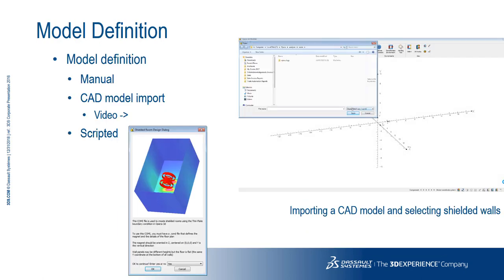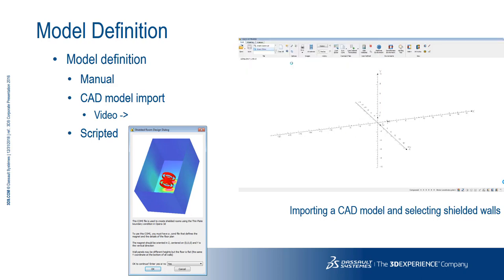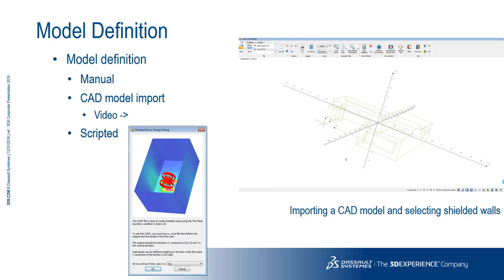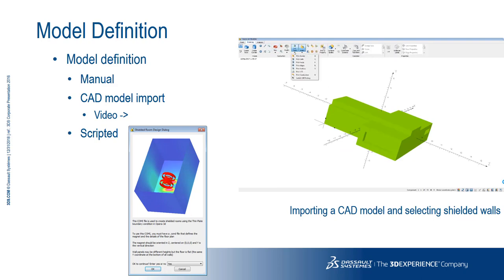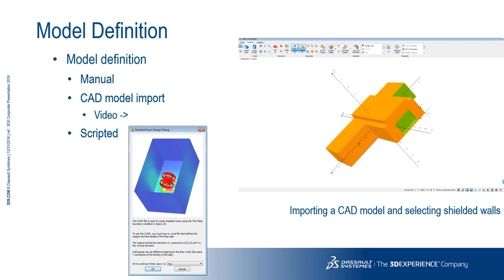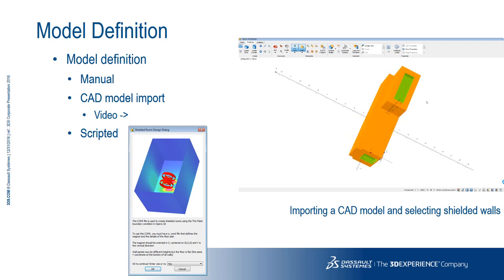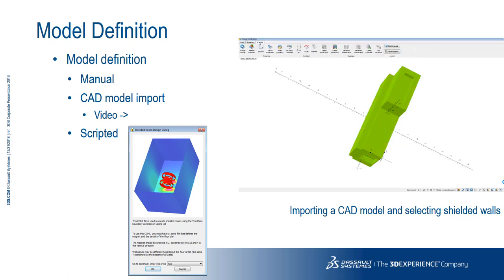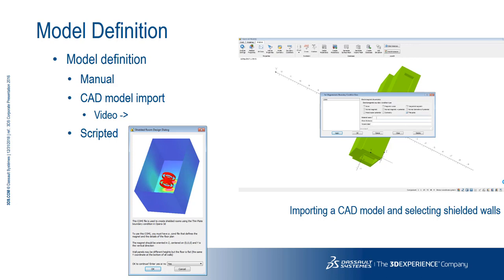When it comes to defining the model in Opera, you have a number of choices. You can define geometry using Opera's own modeller, where primitives are created and operations can be carried out to intersect, combine, and trim. Once the room geometry is defined and properties for the various materials and magnet are set, the whole problem is enveloped in air for solution. Alternatively, you can read a model of the room from a CAD file, which again shows the ease of use of the thin plate boundary condition — the user need only select the walls that are shielded with no requirement to create thin meshable volumes by sweeping walls. This process of reading a STEP file and selecting the shielded walls is shown in the video that's playing. Finally, all of this can be scripted to automate the process. Contact us if you'd like a copy of the sample script for your own Opera installation.